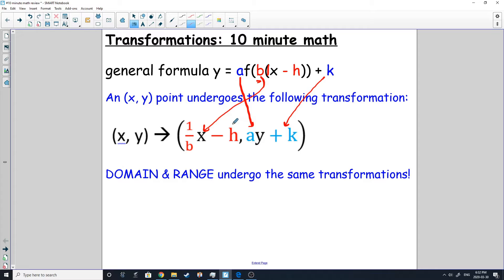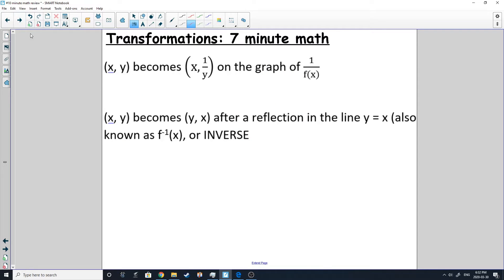Domain and range will undergo the same transformations in each case. Also, the XY point becomes X one over Y on the graph of one over F of X. So that is the reciprocal graph. One last piece of review is that if you have an XY point and it's becoming YX after a reflection on the line Y equals X, that is called F inverse of X or the inverse.